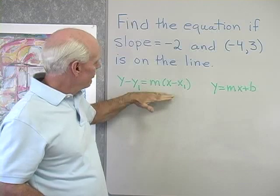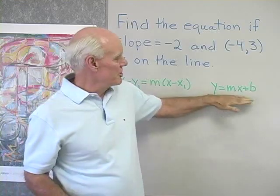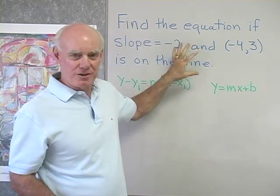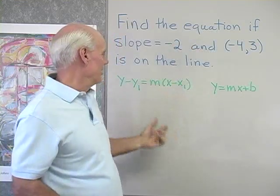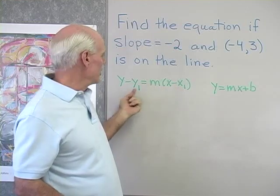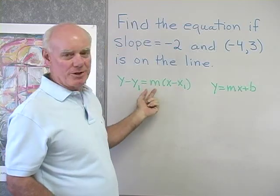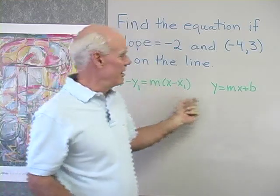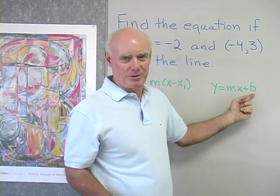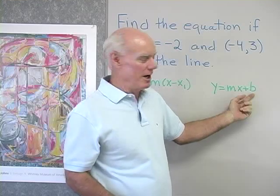We have two forms of the equation of a line that we can use to solve this problem. This is called the point-slope form of the equation of a line, and this is the slope-intercept form of the equation of a line.